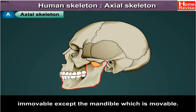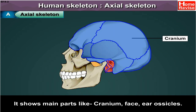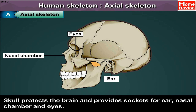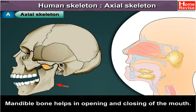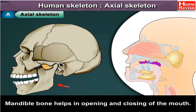The skull bones are immovable except the mandible, which is movable. It shows main parts like cranium, face, and ear ossicles. The skull protects the brain and provides sockets for the ear, nasal chamber, and eyes. It gives proper shape to the head and face. The mandible bone helps in opening and closing of the mouth.